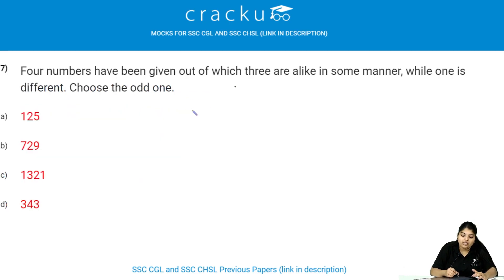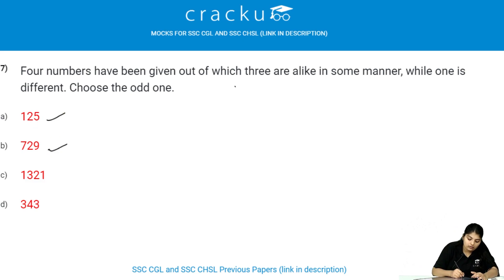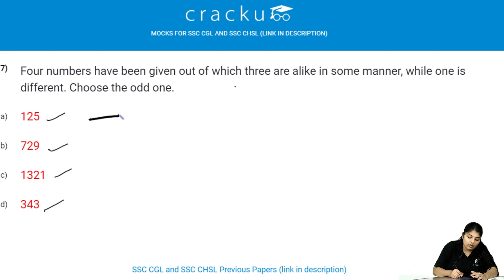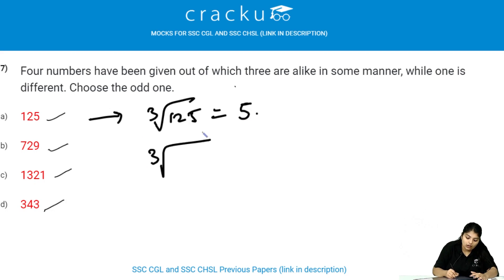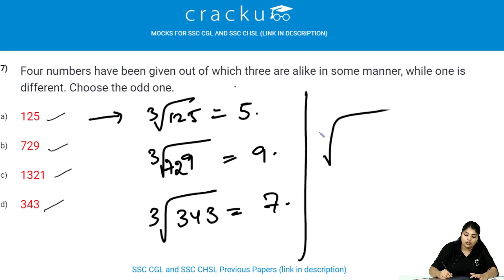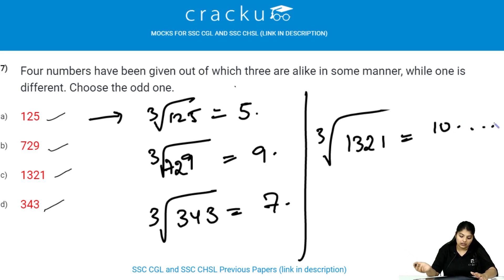Four numbers are given, out of which three are alike while one is different — choose the odd one out. The options are: 125, 729, 1321, and 343. These are cubes of numbers. Cube root of 125 is 5, cube root of 729 is 9, cube root of 343 is 7. But the cube root of 1321 is 10-point-something — not a perfect cube. Therefore, the odd one out is option C, 1321.